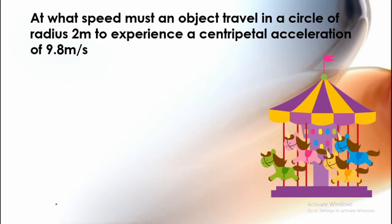At what speed must an object travel in a circle of radius 2 meters? We have to find the speed of an object that moves in a circle whose radius is 2 meters and its centripetal acceleration is equal to 9.8 meters per second squared. We have to find the velocity.